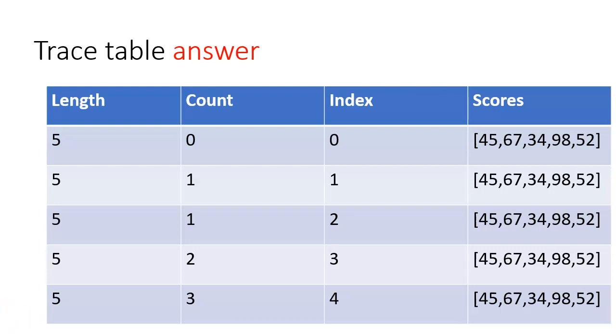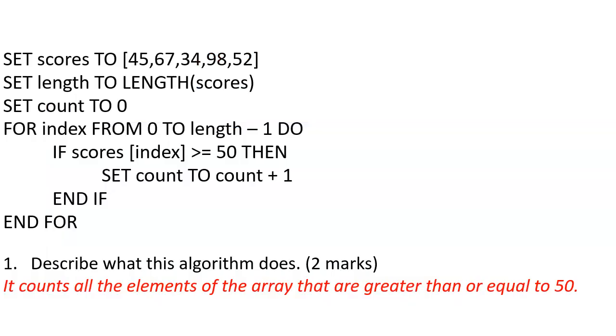So if you can imagine perhaps an example of the use of this - if that was the students' test scores and the pass mark was 50 or more, and I want to count all the students who passed, so all the students who got more than 50, so I've counted three there. So to answer that question then: describe what this algorithm does. It counts all the elements of the array that are greater than or equal to 50.